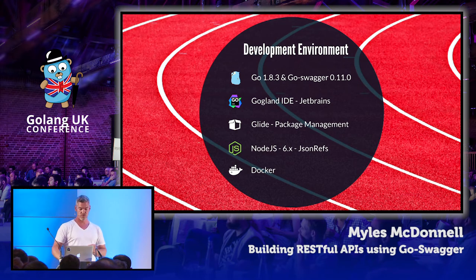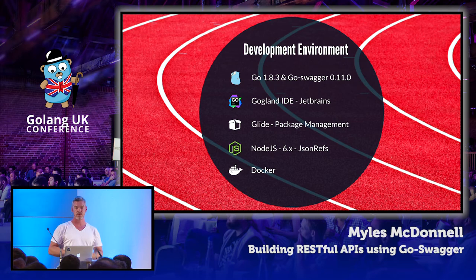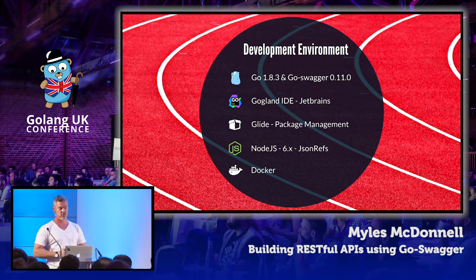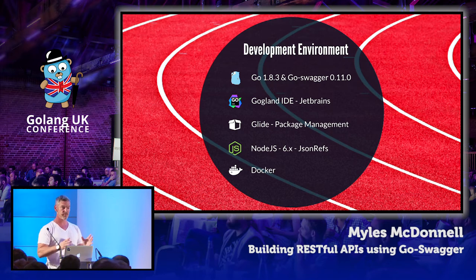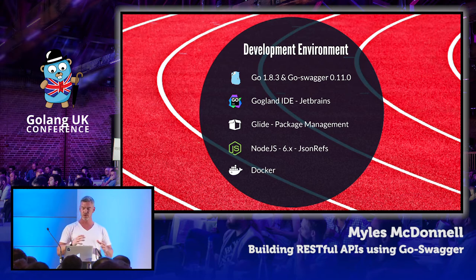I'm a JetBrains fan so I'm going to use the Gogland IDE. For package management — as Steve mentioned in the keynote, package management is considered somewhat weak in Go — I'm using Glide, which has been absolutely fine in this use case. I'm also using Node.js for part of the toolchain, and I'll explain why later on. We're also going to do some demonstration with Docker when we come to the packaging and deployment of the service. It's maybe a 50-50 split of what's Go-specific and what's generic around packaging and deployment.